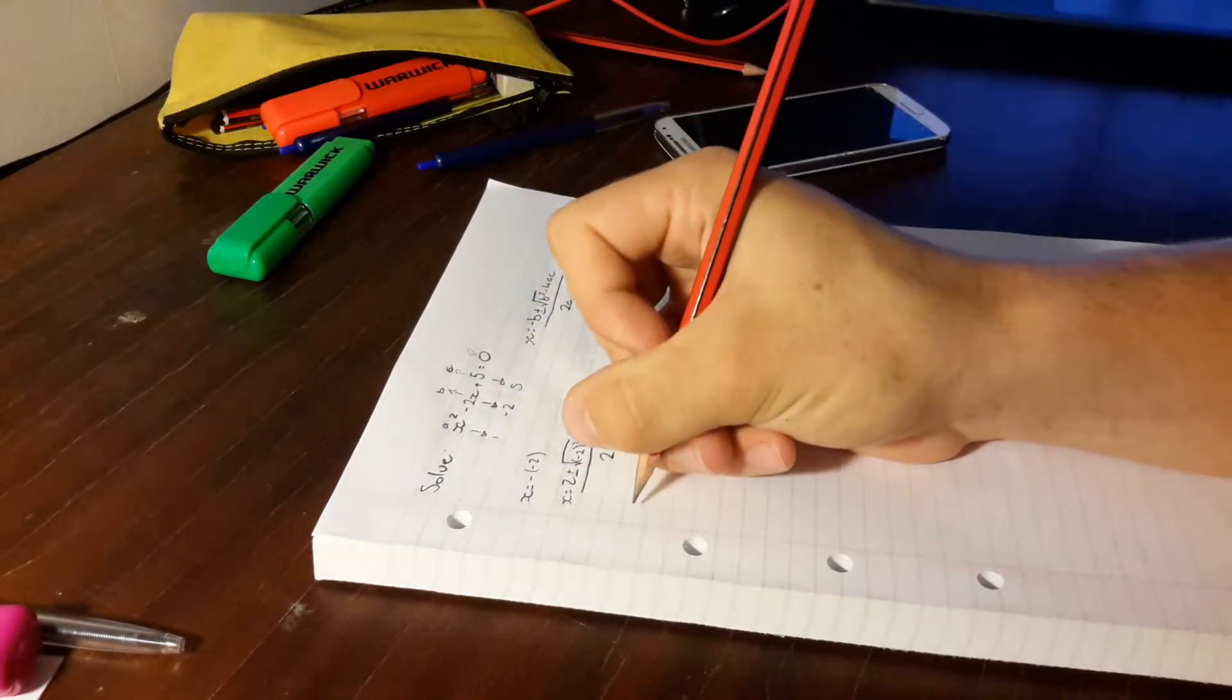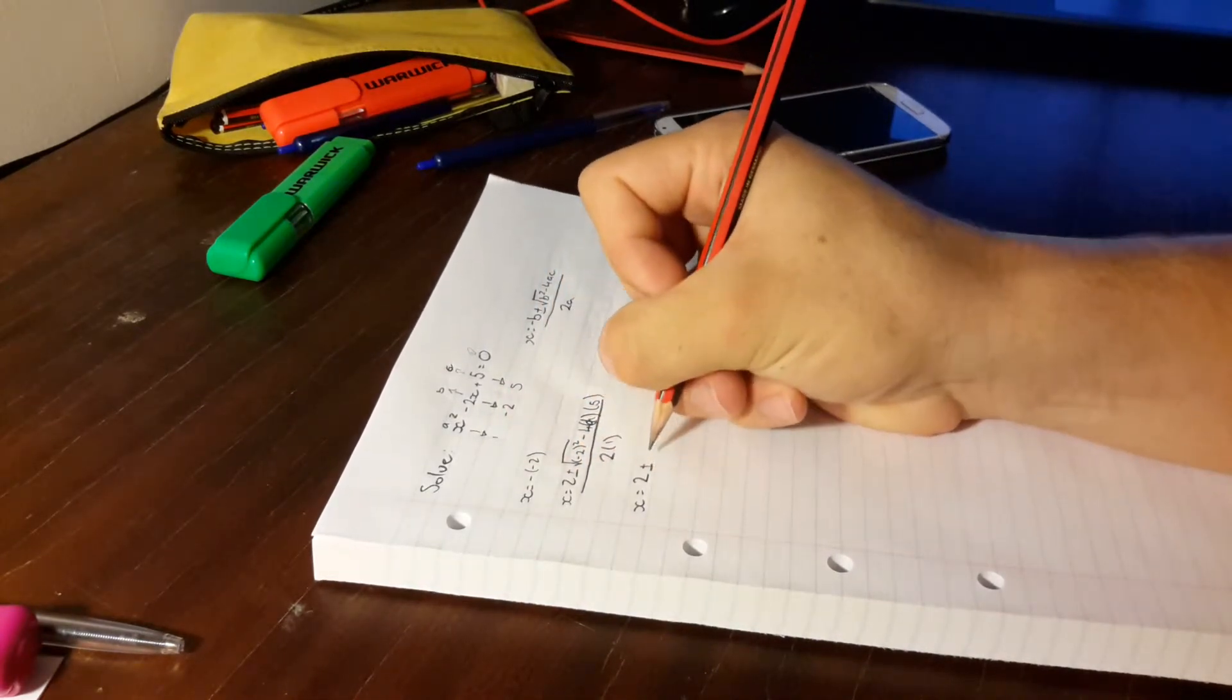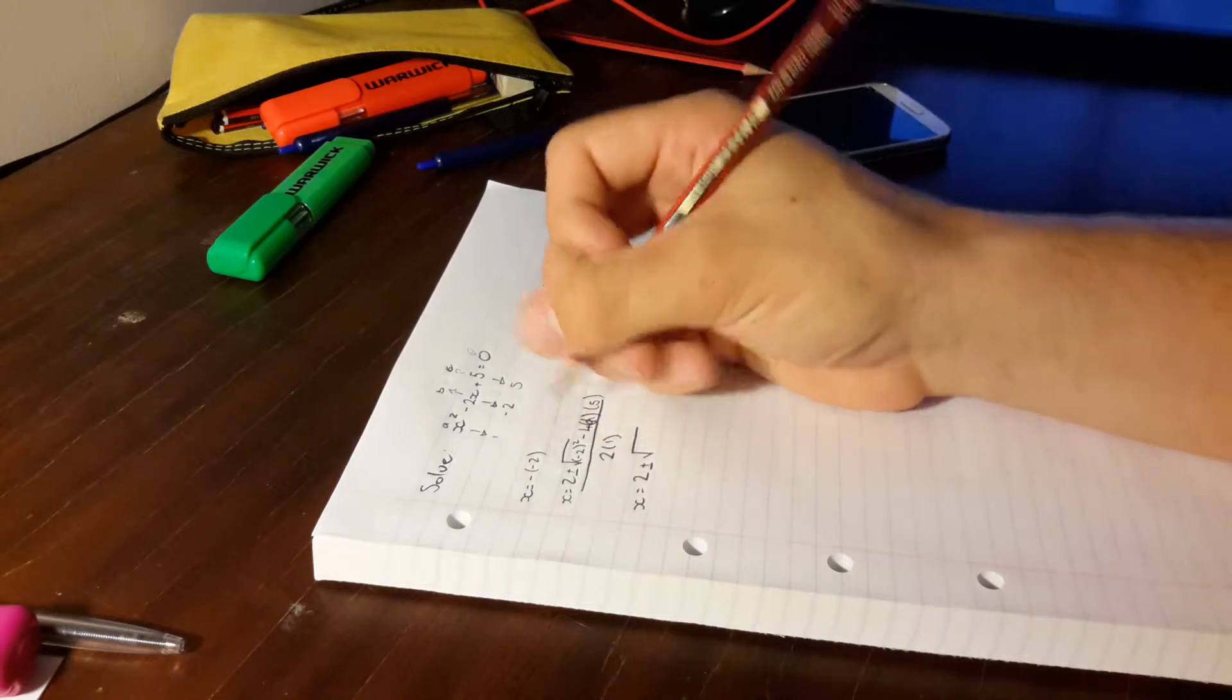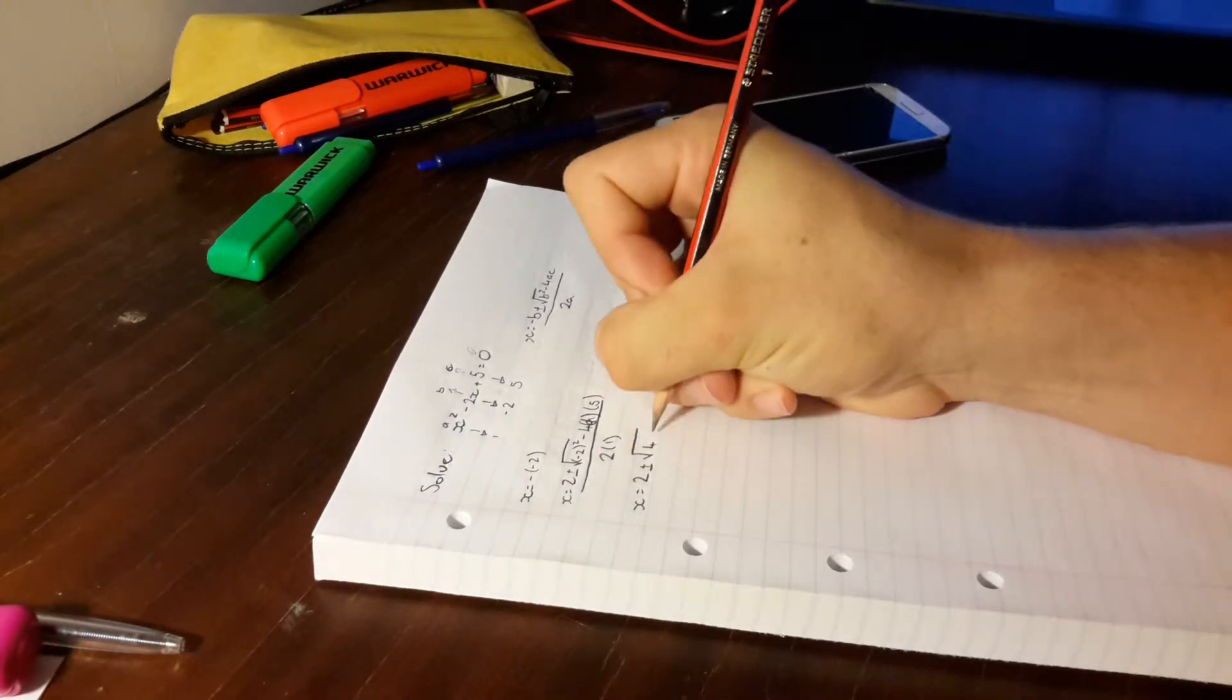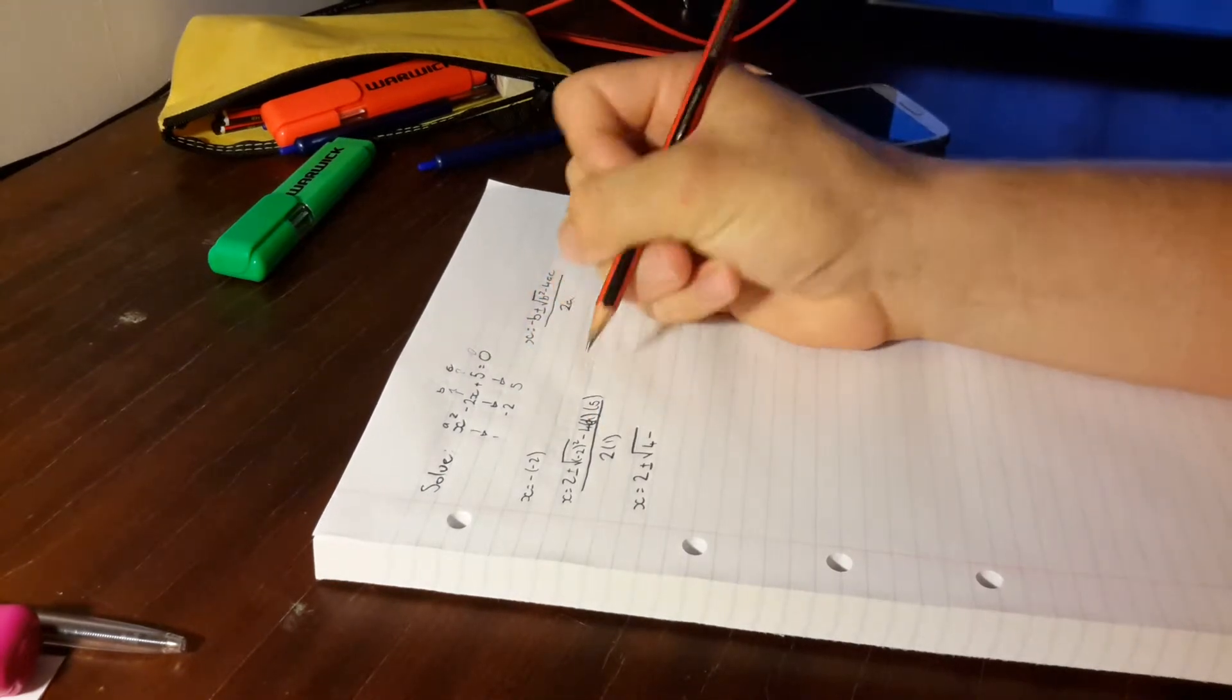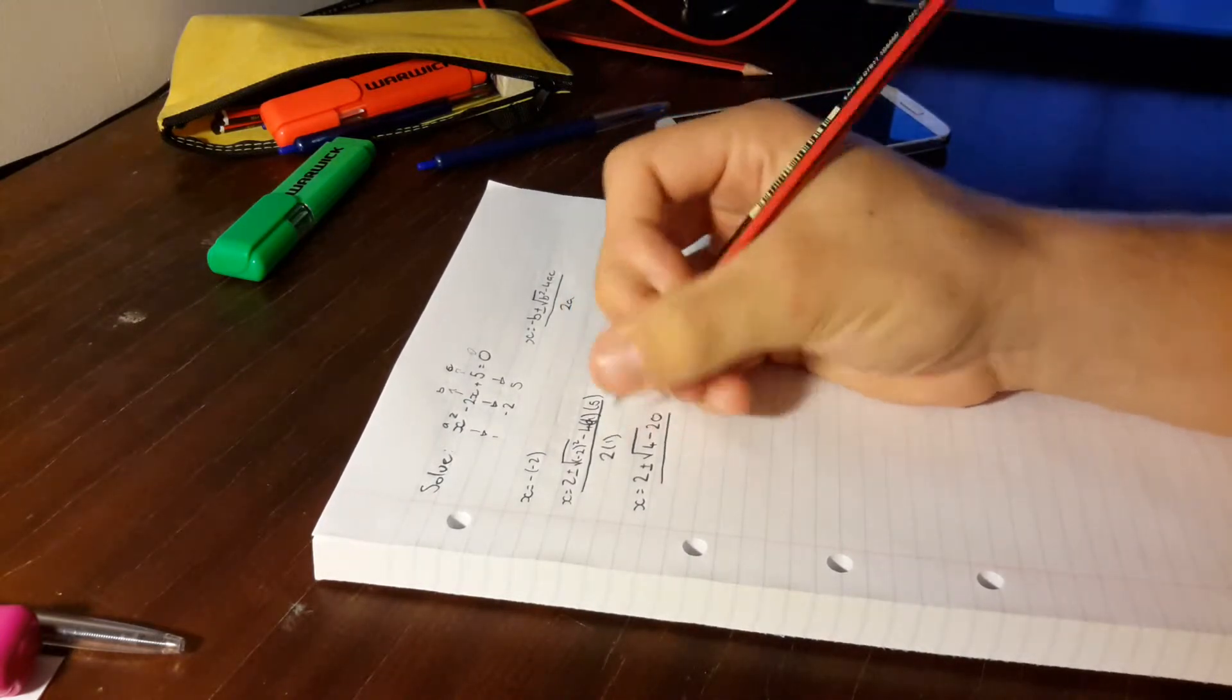So we want to go and simplify this. So we go 2 because we can't simplify that anymore. Plus or minus the square root of negative 2 squared. So negative 2 squared is positive 4 because negative 2 times negative 2 equals a positive. So 4 minus negative 4 times 1 is still negative 4. And then negative 4 times 5 is negative 20 over 2 times 1 is still 2.